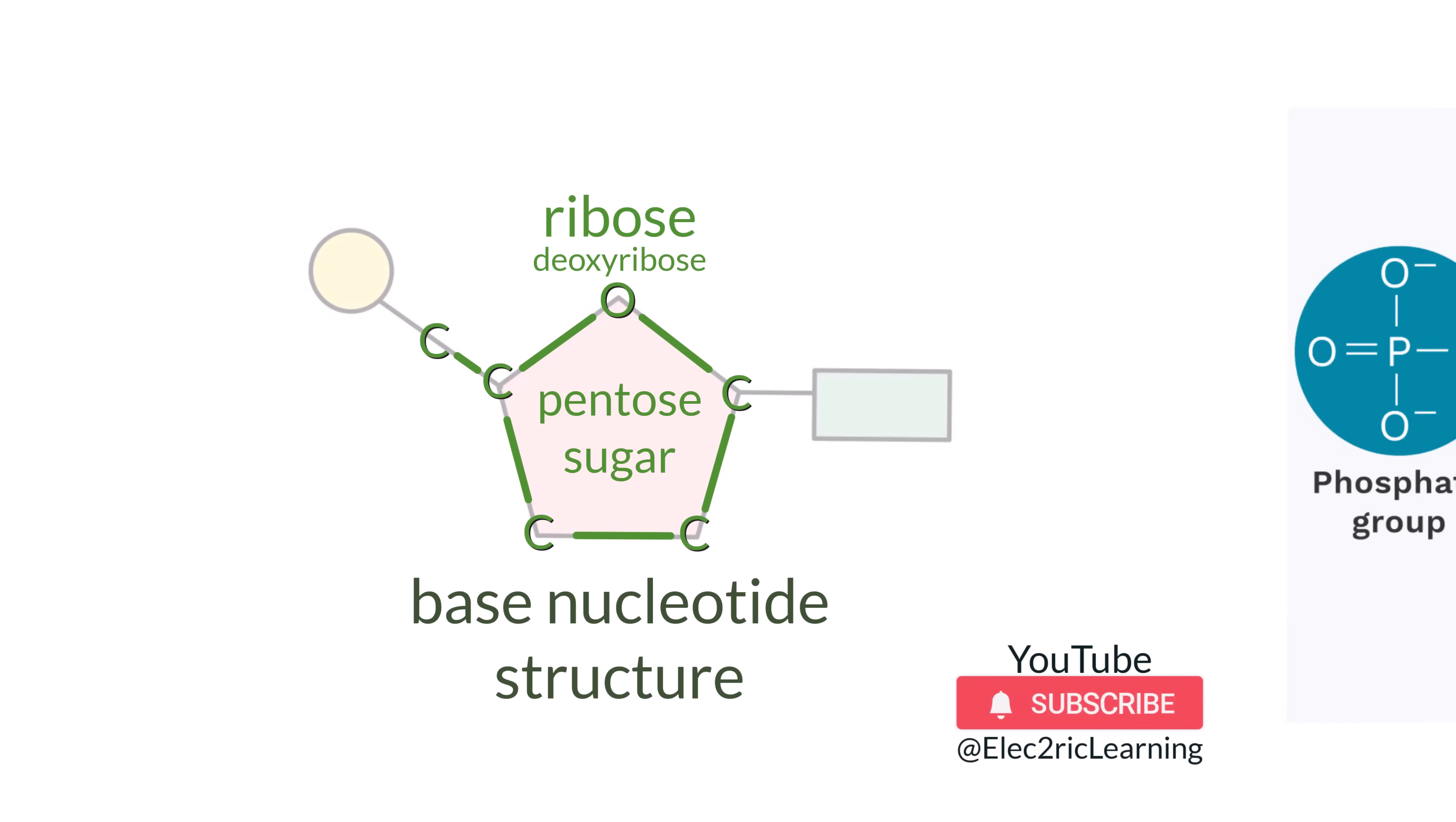Next, connected to the fifth carbon of the sugar is a phosphate group, which we draw as a circle. The chemical formula for phosphate is PO4, with an overall charge of minus 3.